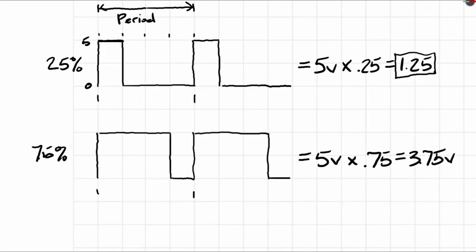The same is true with the 75%. It's on more of the time. It's at 5V more of the time than it is at 0V. So you'd have 3.75V of output in this case.